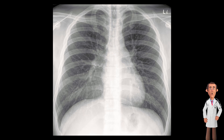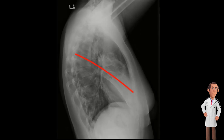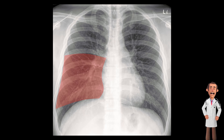Moving on to the lung fields, we will start with the lobes. The right lung is divided into three distinct lobes by the horizontal fissure and the oblique fissure. The right upper lobe is highlighted here. Then we see the right middle lobe, which overlaps with the right heart border, and the right lower lobe, which touches the right hemidiaphragm.